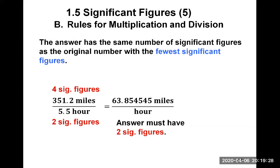We need to keep two significant figures in the final answer because we should not give more precision than what we had in the given numbers — significant figures represent precision. So we start counting from the left: we keep the 6 and the 3, then decide how to drop the rest. The next digit after the 3 is an 8, which is above 5, so we round up. The answer is 64.